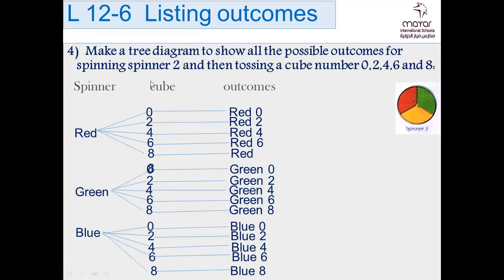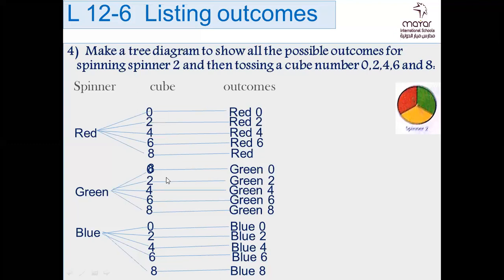I didn't understand this lesson very well. Okay, Omar — you should go to every outcome alone. Here we are spinning a spinner and tossing a cube number, so you take one from the spinner and one from the cube number. Every time you spin the spinner you could have red, green, or blue; every time you toss the cube you get 0, 2, 4, 6, 8. Start with red: red 0, red 2, red 4, red 6, red 8 — finished. Then green 0, green 2, green 4, green 6, green 8 — finished. Then blue 0, blue 2.